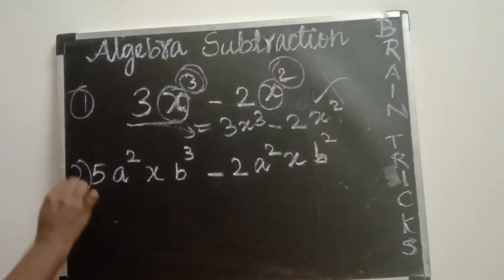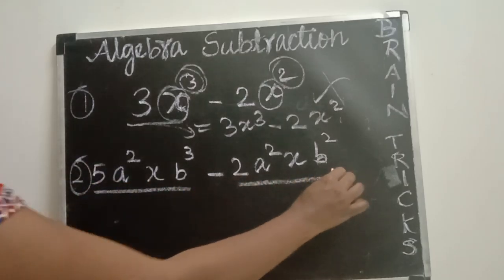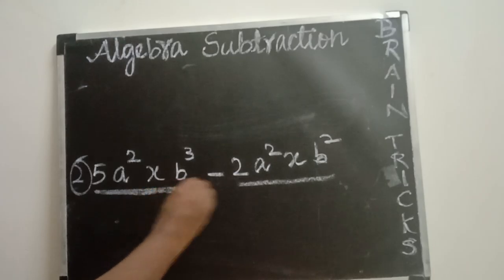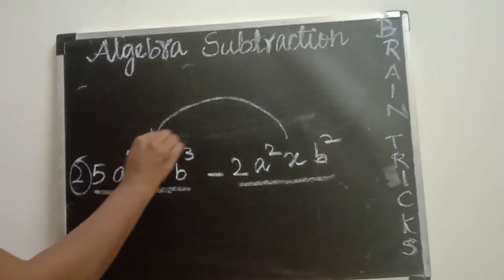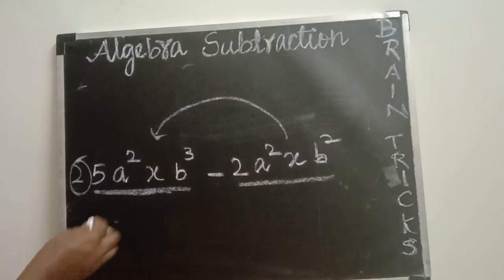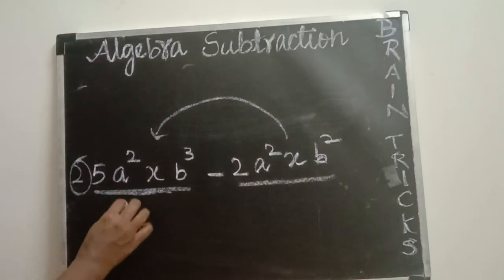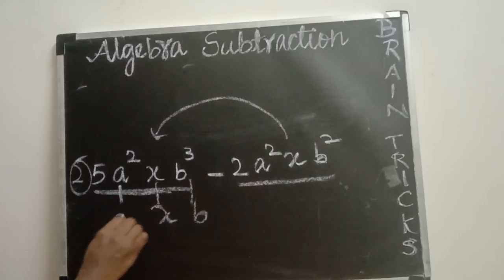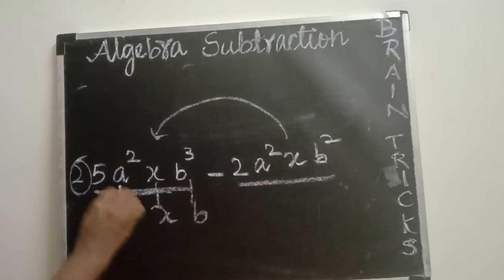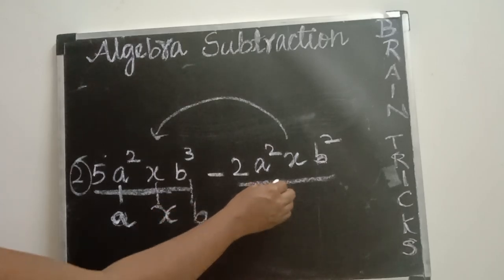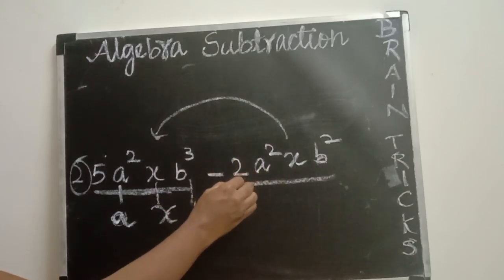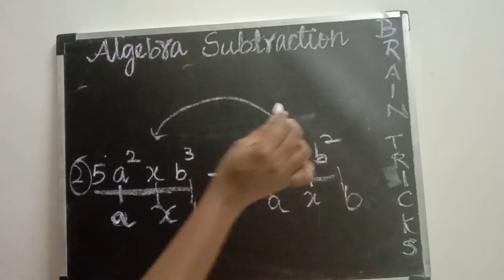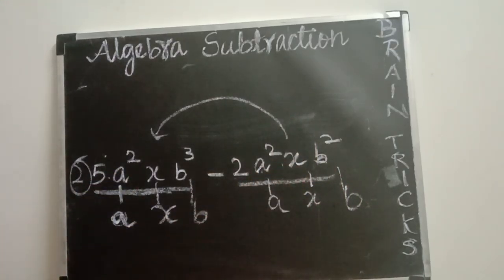Moving to the next example: two terms where you are going to do subtraction. First, check the variables. In this expression we have 3 variables. The first term has 3 variables: A, X, and B. Check the next term — it also has 3 variables: A, X, and B. Both terms are having 3 variables.